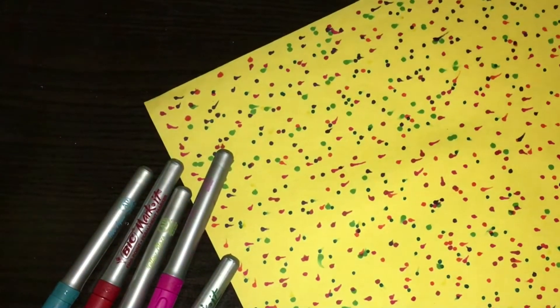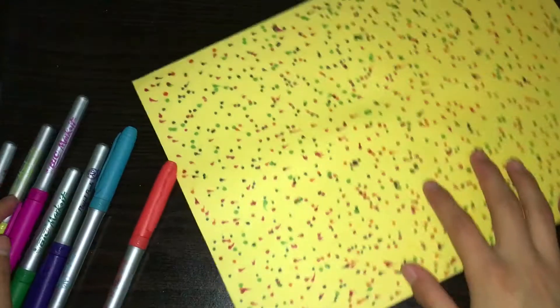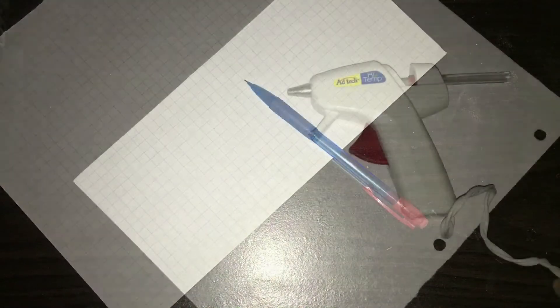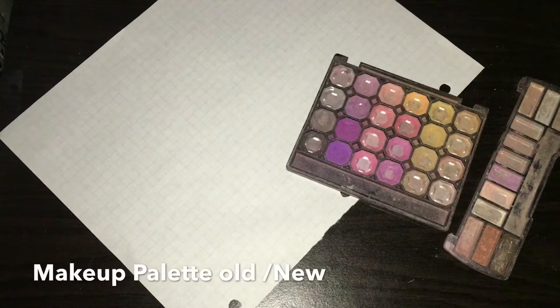For the second thing, you will need any kind of paper, a pencil or pen, a glue gun, and some makeup palette that could be ordinary. The first thing you need to do is draw anything you want. For example, I started drawing a heart because it will be easier.